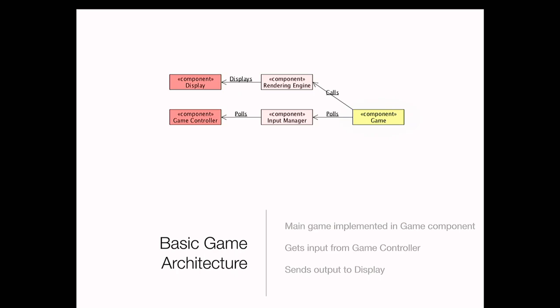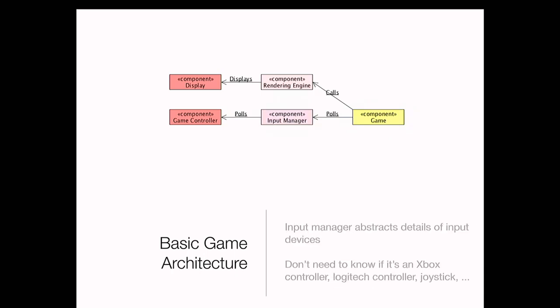So in the basic game — this is a simplified picture of what a modern game might look like. You'd have a component called the game that includes all the logic related to your game. The player has to interact with the computer somehow, so your game needs to perform some sort of input — it either needs to read the keyboard and mouse, use a controller, or if it's on a cell phone, access that user interface.